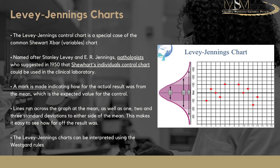Normally, the two standard deviation limit is seen as your warning limit, while the three standard deviation limit is your action limit. With some systems, the one-sigma is the warning and two-sigma is the action limit, meaning anything outside two standard deviations is considered out of control. Levy-Jennings charts are interpreted using Westgard rules, which we'll discuss shortly. You'll also notice that a Levy-Jennings chart is essentially a sideways normal distribution curve.